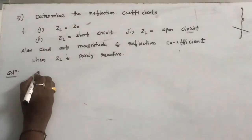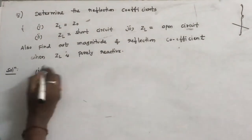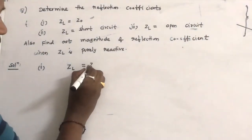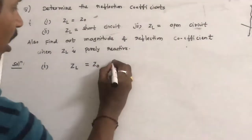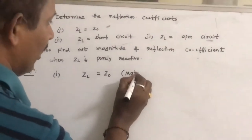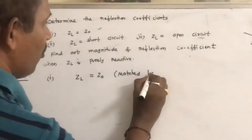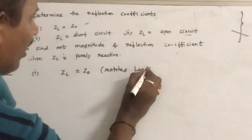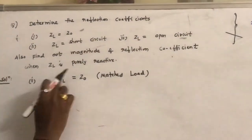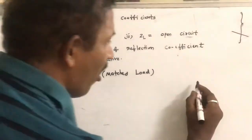First, let us find out the first given condition: the load ZL is equal to Z0. This condition is also called the matched load condition. If in the same question it is given that ZL is a matching load, then you have to take ZL as Z0.